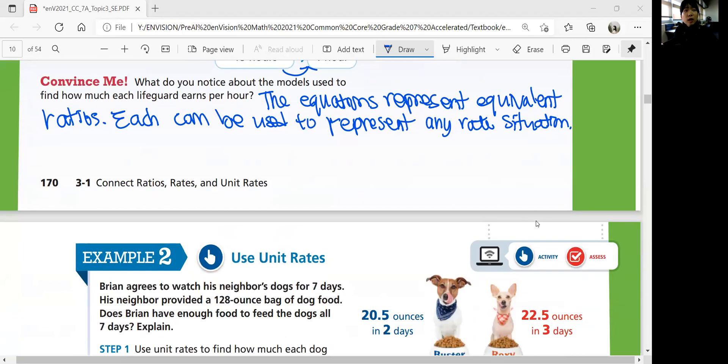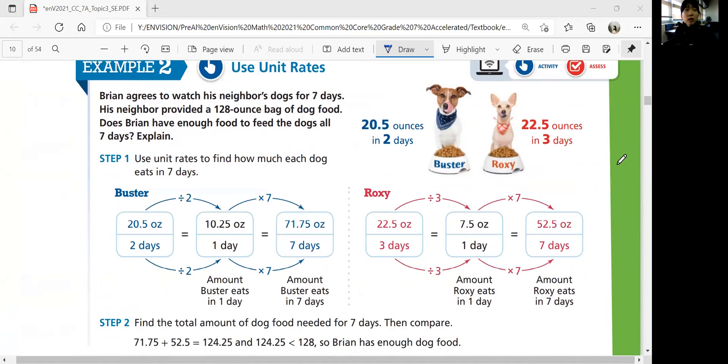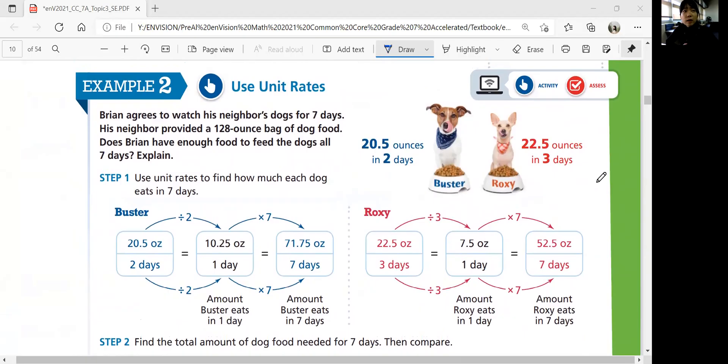Let's look at example two, using unit rates. Ryan agrees to watch his neighbor's dogs for seven days. His neighbor provided a 128-ounce bag of dog food. Does Ryan have enough food to feed the dogs all seven days? So he's going to watch his neighbor's dogs for seven days, and he got a 128-ounce bag of dog food. Is it enough? It looks like we have two dogs. We're going to use unit rates to find how much each dog eats in seven days.